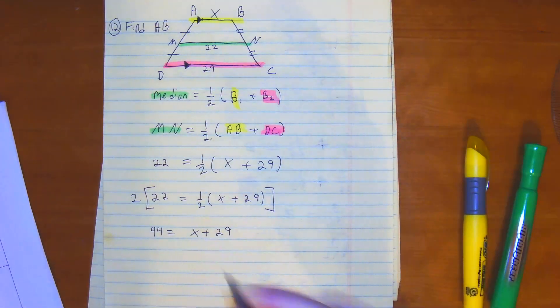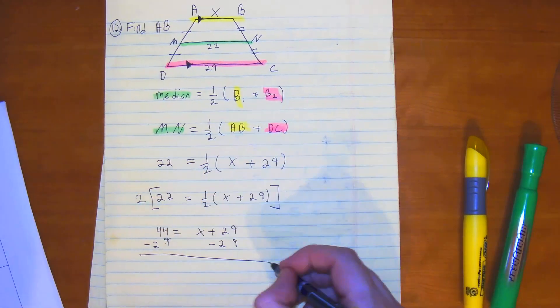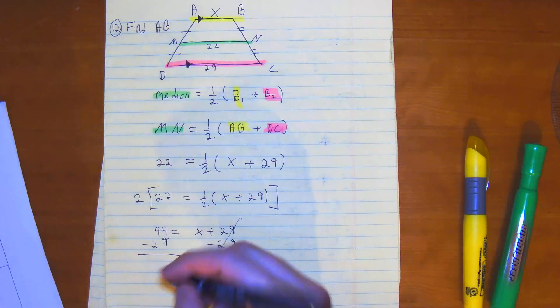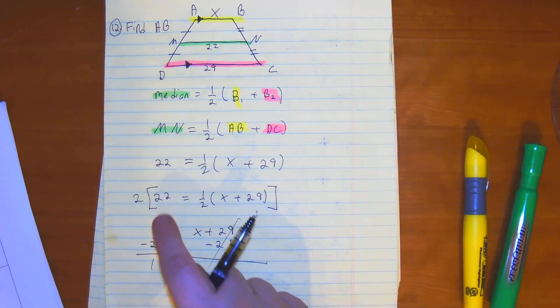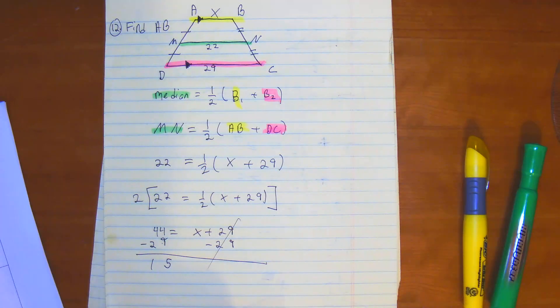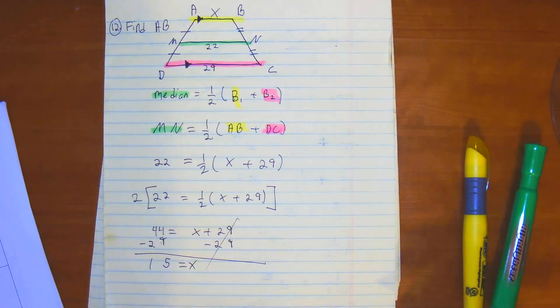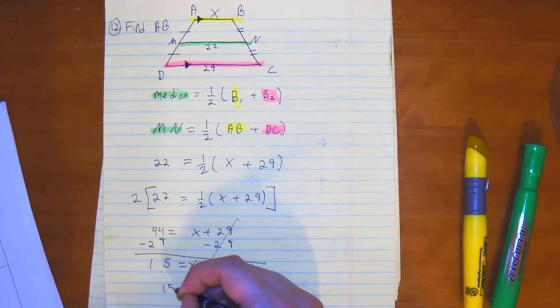And then from here, we subtract 29 from both sides. 44 minus 29 is 15, so 15 is equal to X, or in other words, AB is equal to 15.